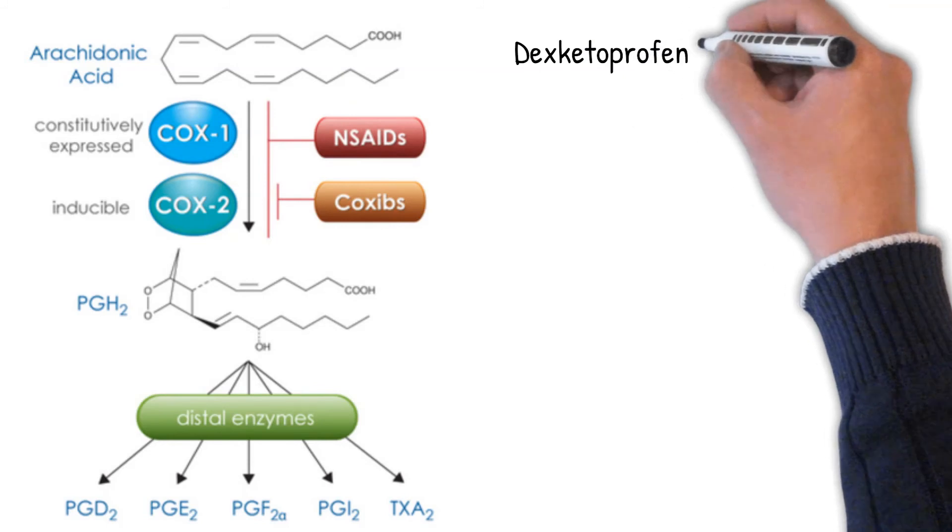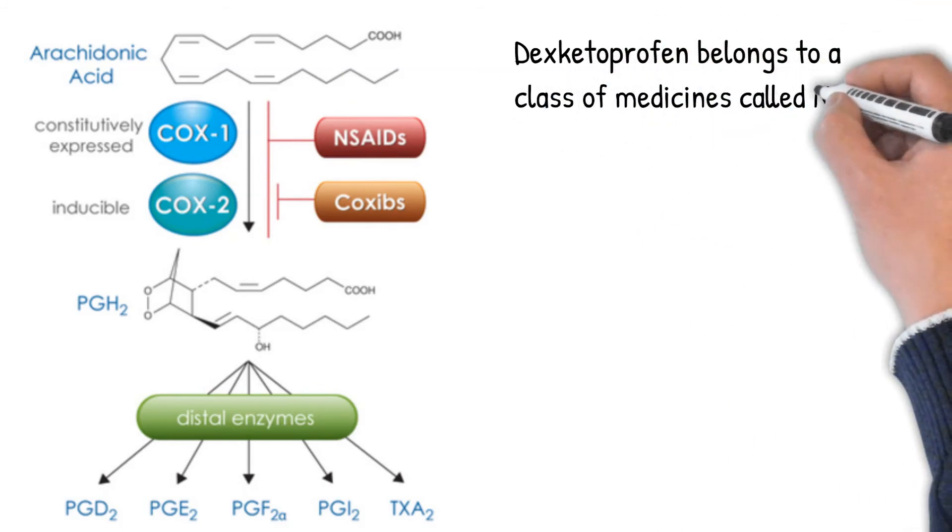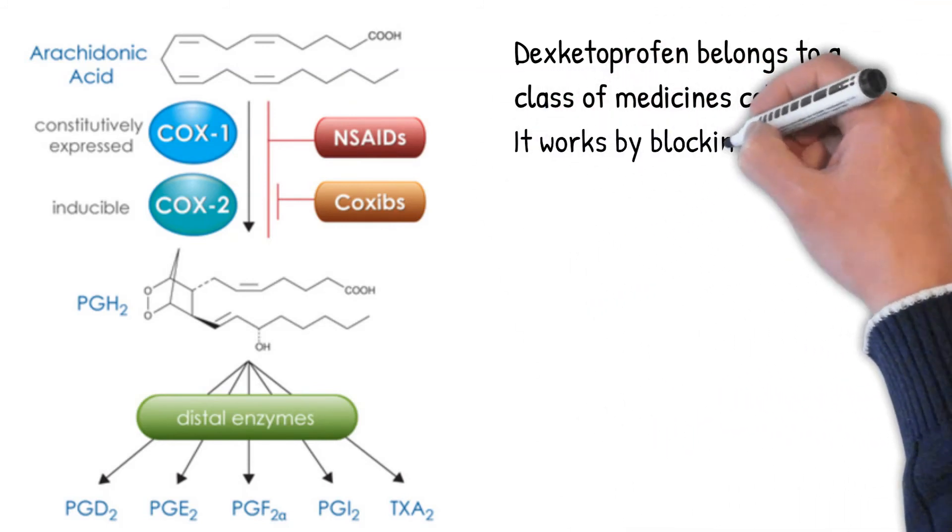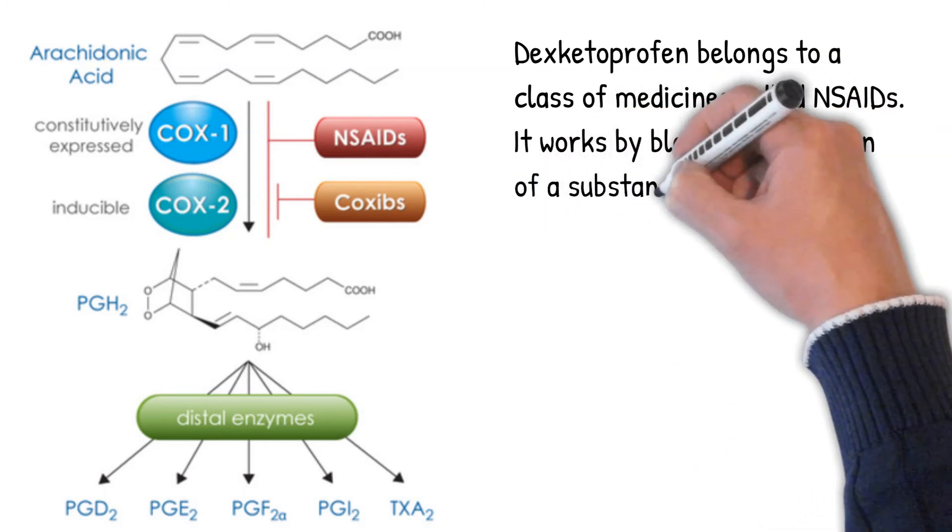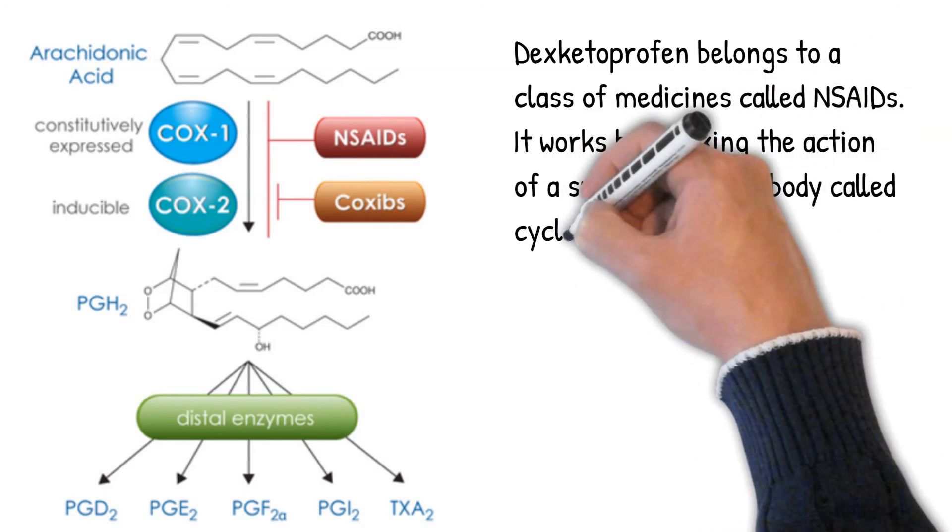Dexketoprofen belongs to a class of medicines called NSAIDs. It works by blocking the action of a substance in the body called cyclooxygenase, which is involved in the production of chemicals in the body called prostaglandins.